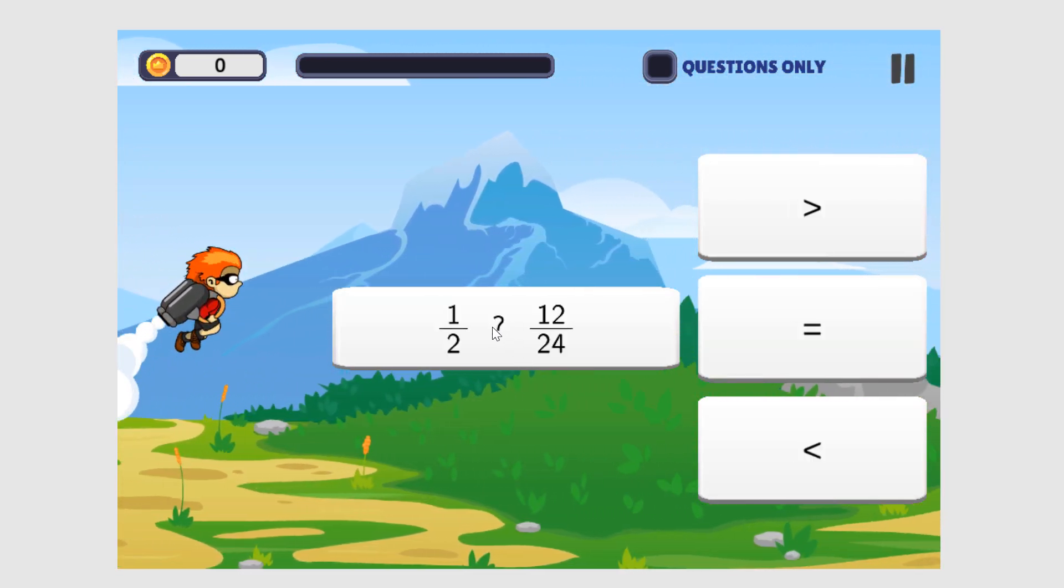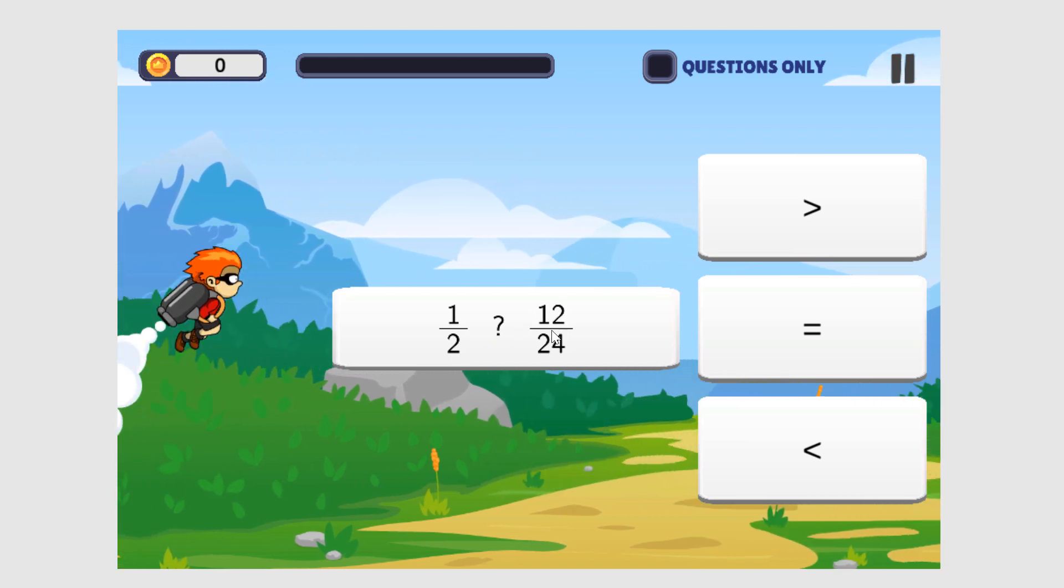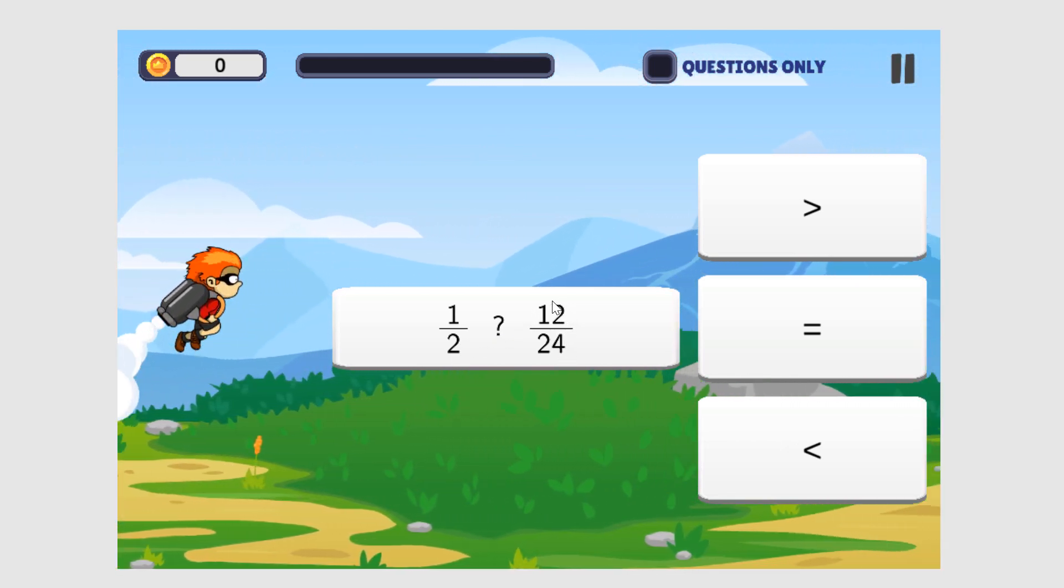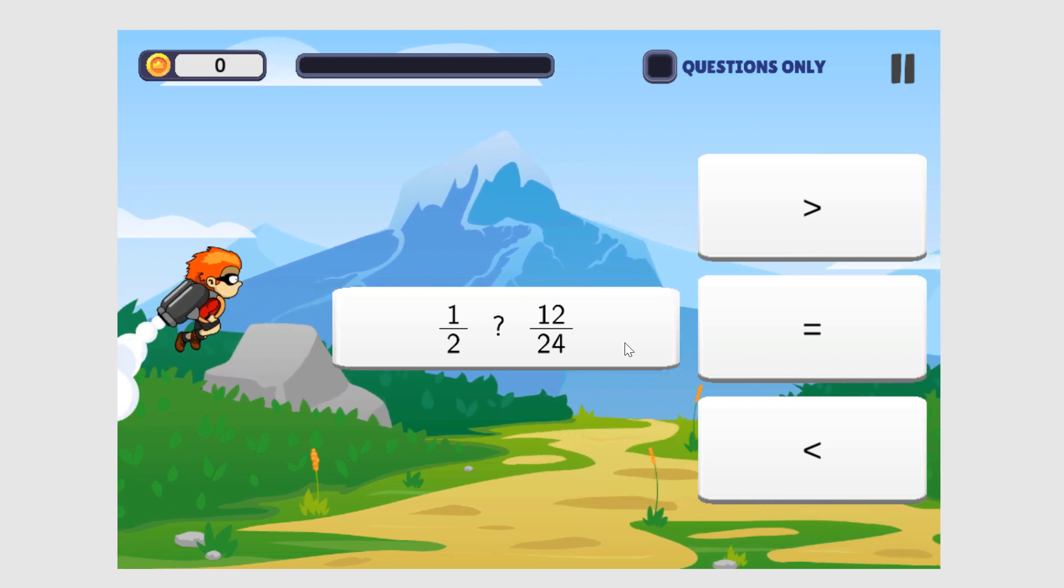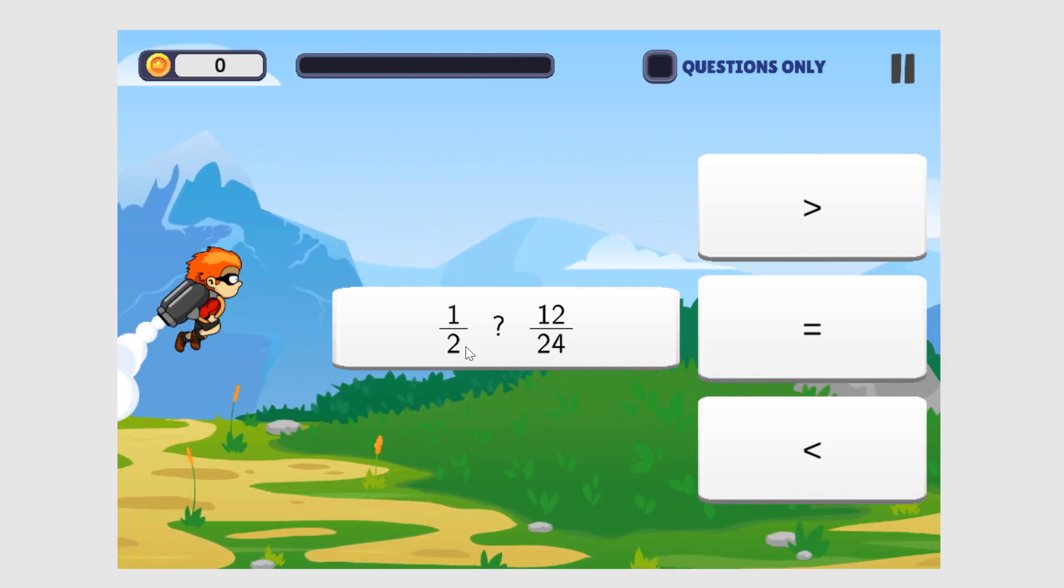So we're going to compare 1 half with 12 24ths. To simplify 12 24ths, we get 1 half. So these two are equal.